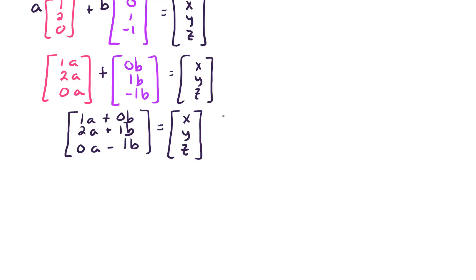Well this really gives us three equations in a linear system, so we get 1a plus 0b equals x, we get 2a plus 1b equals y, and 0a minus 1b equals z.